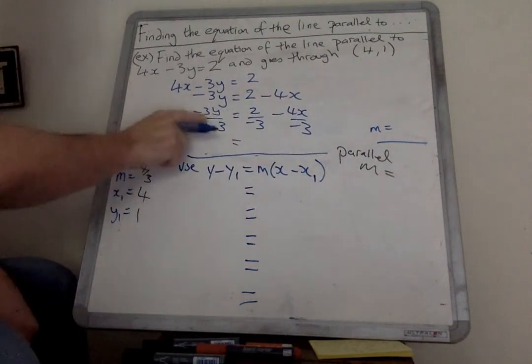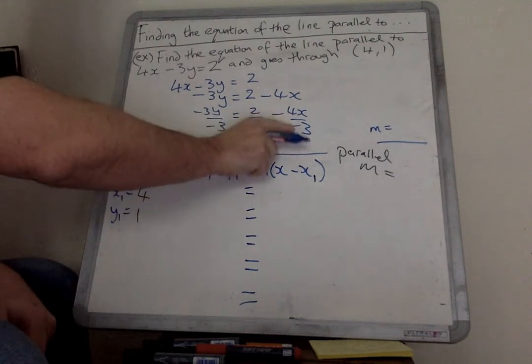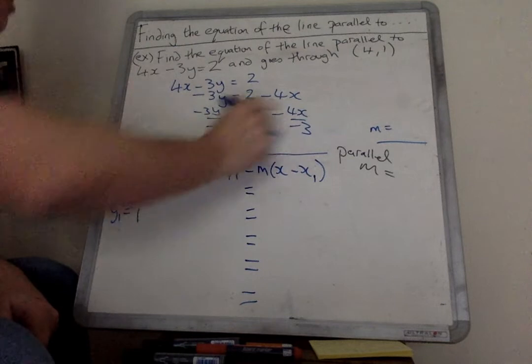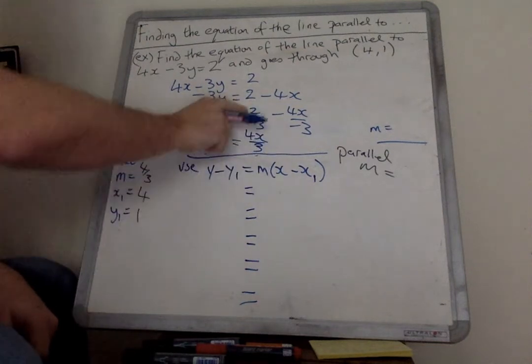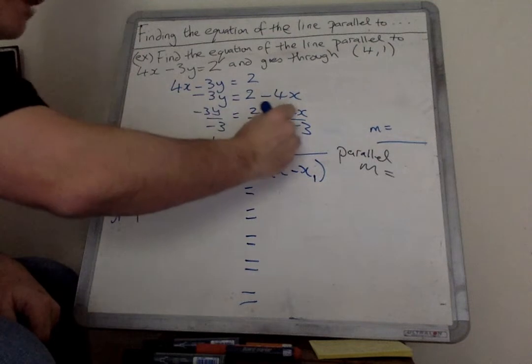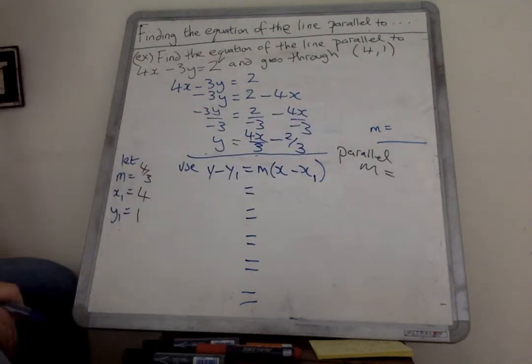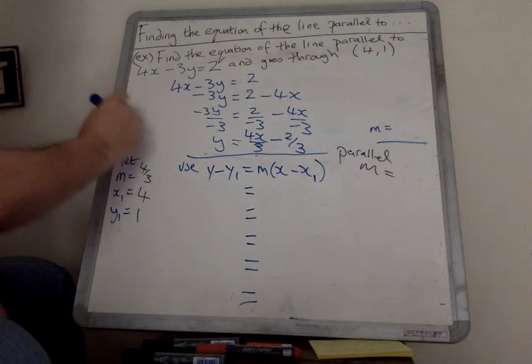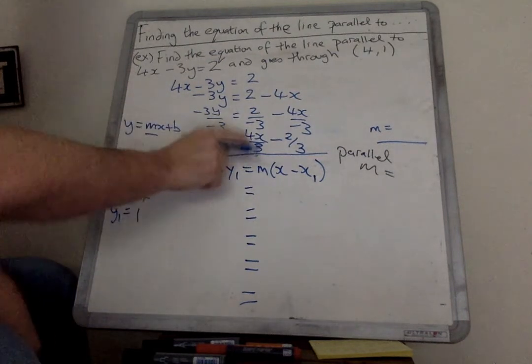Okay, minus 3 divided by minus 3 is 1, so I'm left with y. I'm going to do this part first. A negative divided by a negative is positive, and I'm going to put that towards the front. A positive divided by a negative is negative, so I've ended up with that as an equation. And as you know, the m value we're looking for is always next to the x variable. So if I go here, it's 4 thirds.